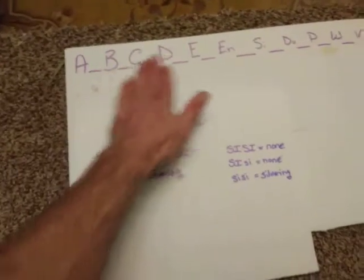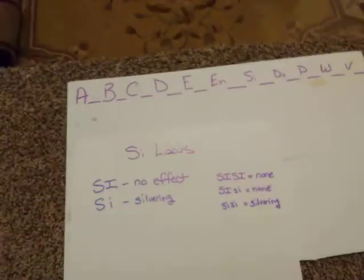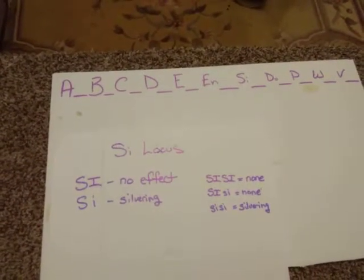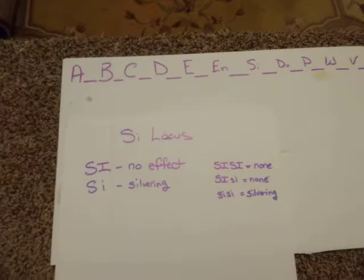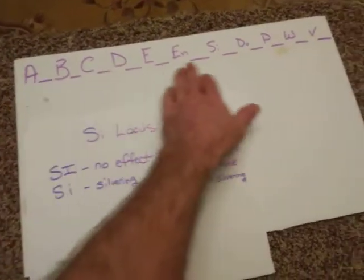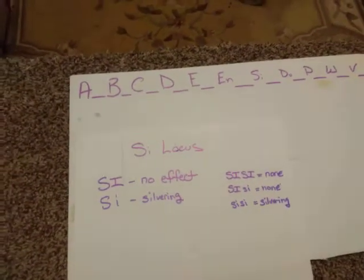If you have not watched the videos previously for the A through En locus, I highly recommend that you go back and watch those and start from the beginning. These first five and six, you're going to run into those the most often. These later ones you're not going to run into very often.